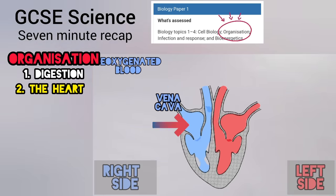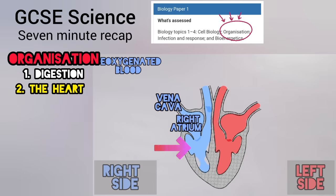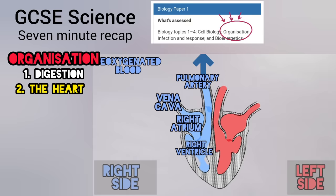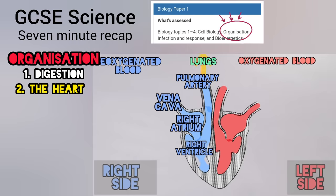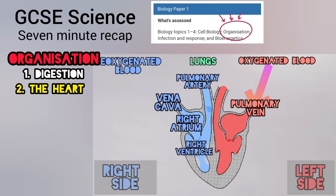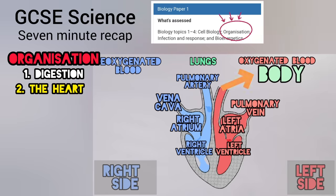Then it goes to the right atrium, now to the ventricle. It needs to get out via the pulmonary artery. From there it goes to the lungs, picks up O2. Now back to the heart again, this time through the pulmonary vein. Now the left side pumps much stronger and sends blood to the body out the aorta.